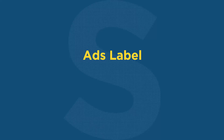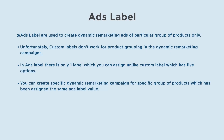Ads labels are used to create dynamic remarketing ads for a particular group of products only. Unfortunately, custom labels don't work for product grouping in dynamic remarketing campaigns. In ads label there is only one label which you can assign, unlike custom labels which have five options.